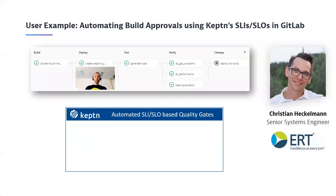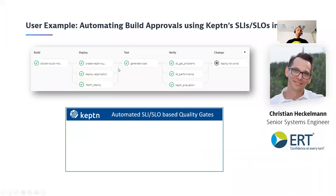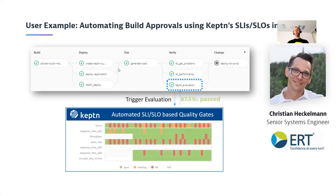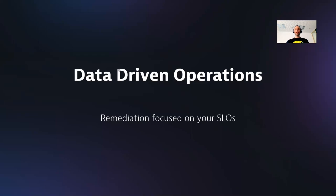SLO evaluation is core to Keptn, but you can also use it standalone. I have to admit it's the first use case people start with — they may already have their pipeline, already deploy with something like GitLab, and already kick off some tests, but haven't yet automated their test validation. So they want to use Keptn for just that: from their existing GitLab pipeline, trigger the Keptn evaluation, and Keptn brings back the result.